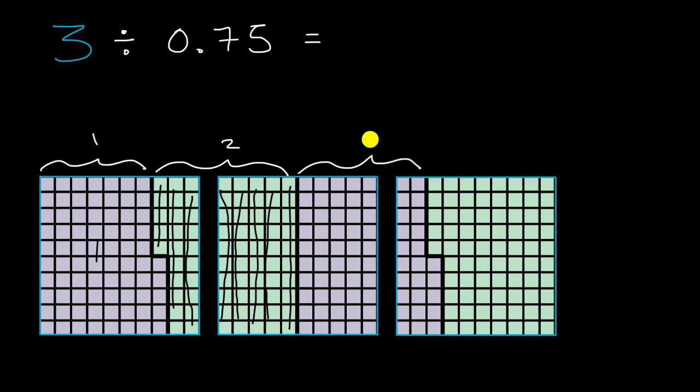And then that's our third group. These are all equal groups of 75 hundredths. And that's our fourth equal group of 75 hundredths in the green again. So how many equal groups of 75 hundredths can you divide three wholes into? Well, clearly it is equal to four.